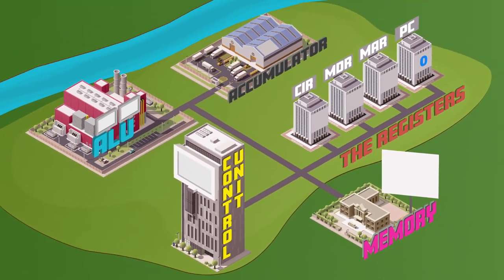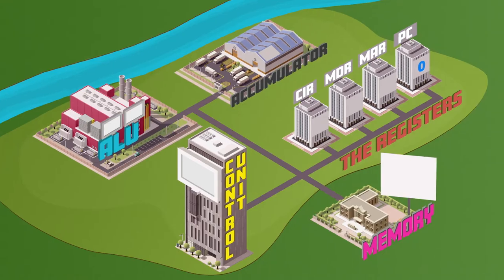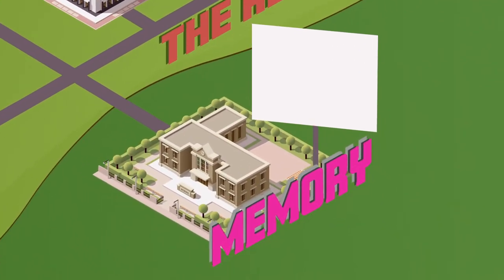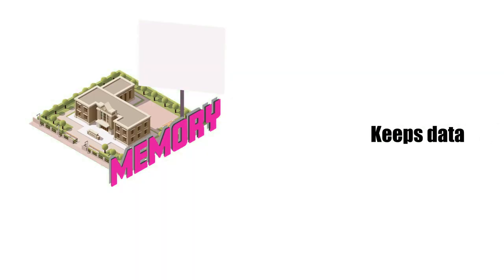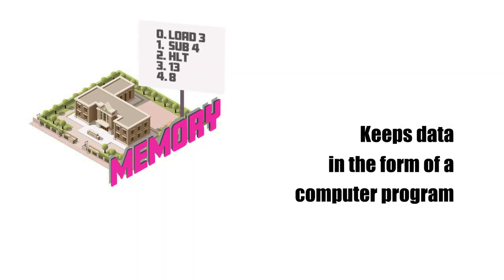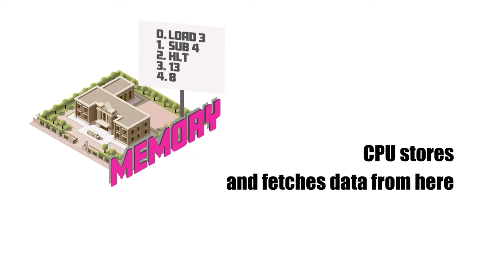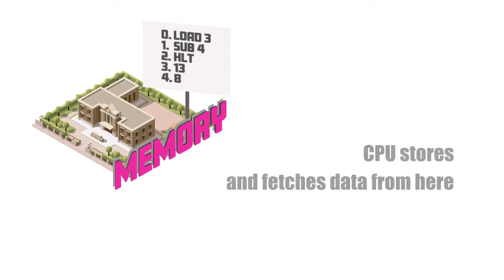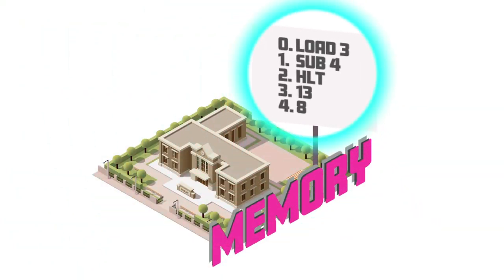The first thing CPU City needs are those instructions. It gets them from outside of the city, from this place — the memory. The memory is the library where data is kept in the form of a computer program. CPU City can store data here as well as fetch from it. As you can see, there are only a few lines of written code currently being stored here, but bear in mind that a modern computer can store billions of lines of code.